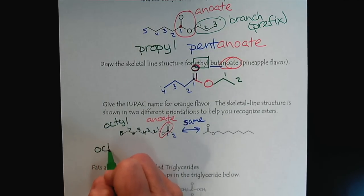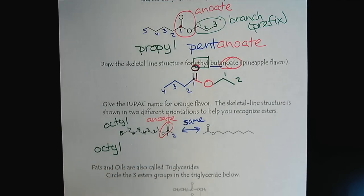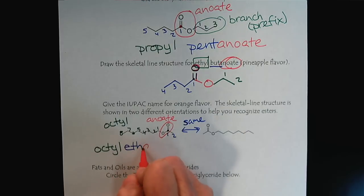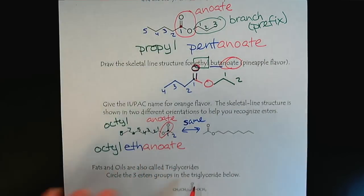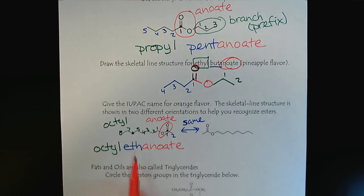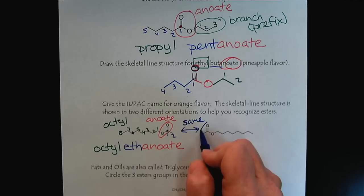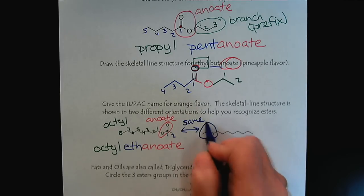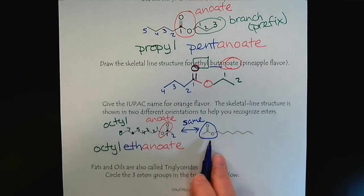This would be octal. And then two carbons is eth. And then anoate to tell everybody it's an ester. This compound in particular is very interesting, or the ethanoate. Because whenever we have this configuration right here, this is the acetate.